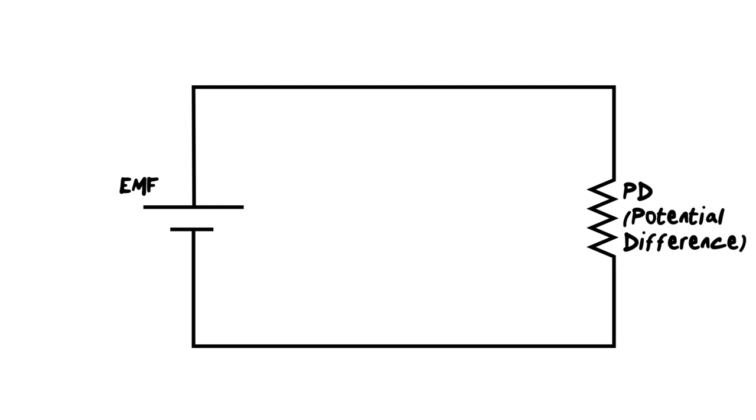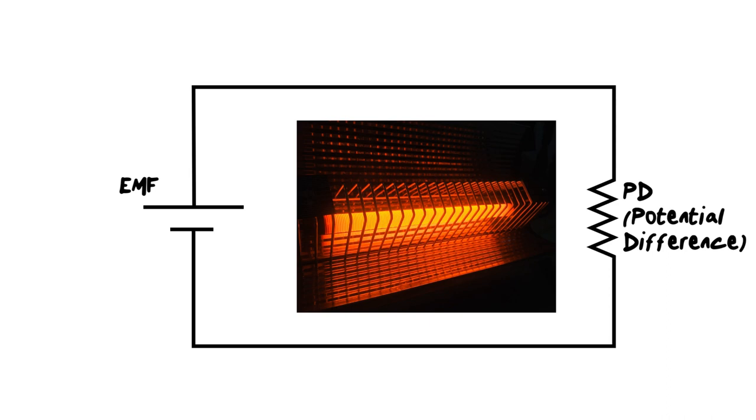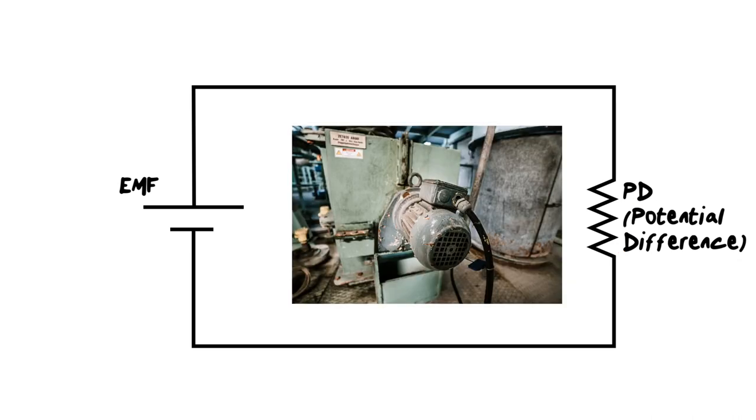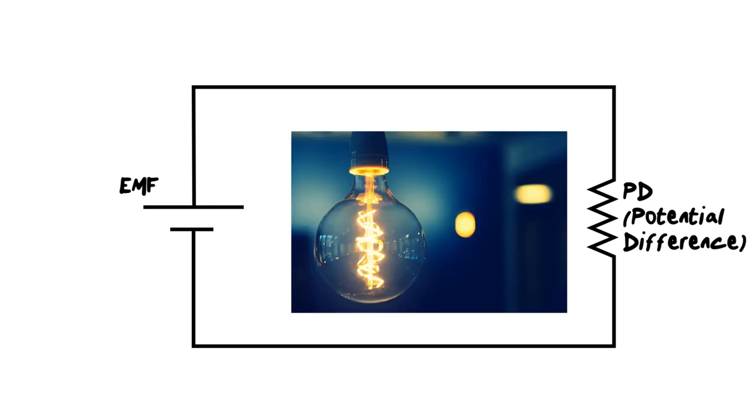Some great examples of that, heaters. So it's taking the electrical energy and creating heat as it flows through the resistor. An electric motor, taking that electrical energy and creating mechanical energy as it starts to turn the rotor of the motor. And the almighty light bulb, taking this electrical energy and converting it into light energy. So that would be an example of potential difference.